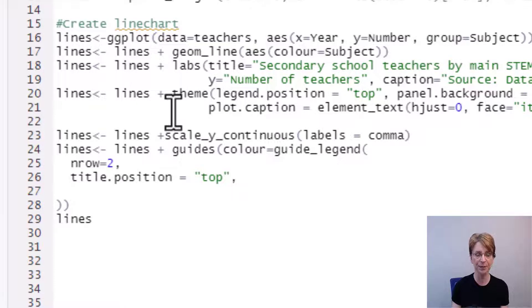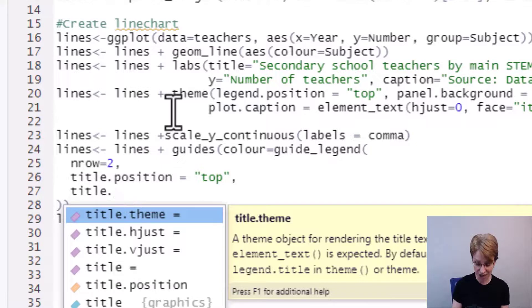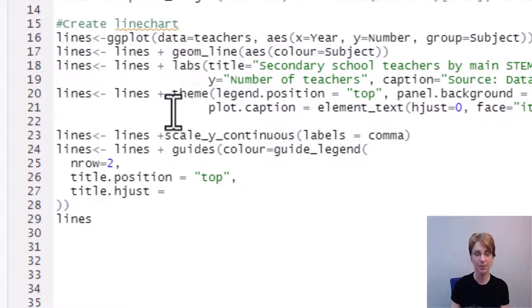I'm going to put a comma. Not only do I want the title to sit above the rows I would like it to sit in the middle of the width of the legend so to do that I type in title.hjust because I am wanting to horizontally justify the title.